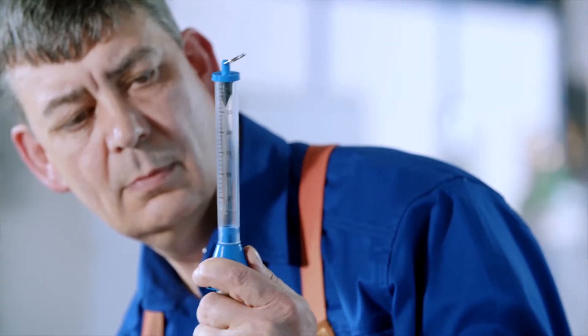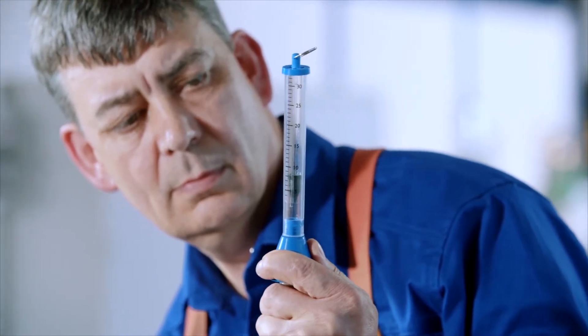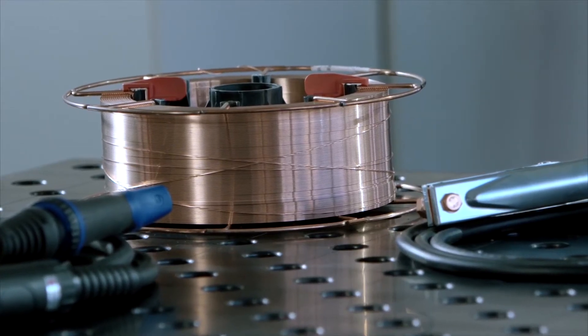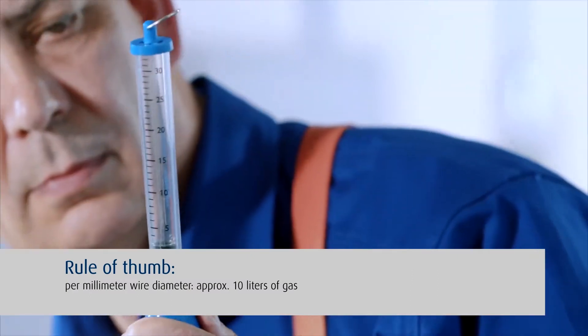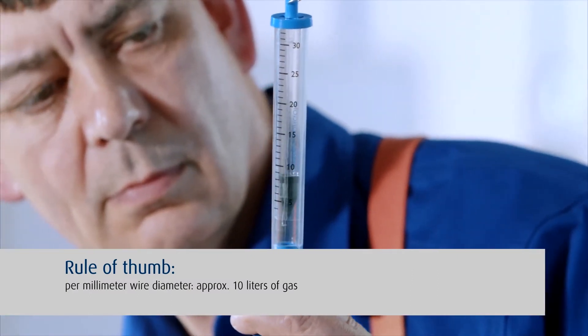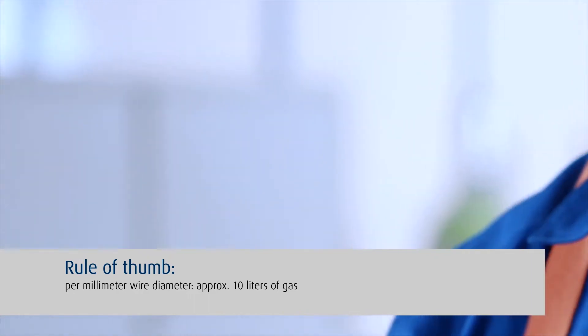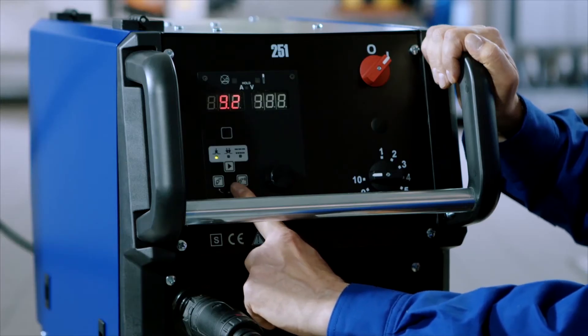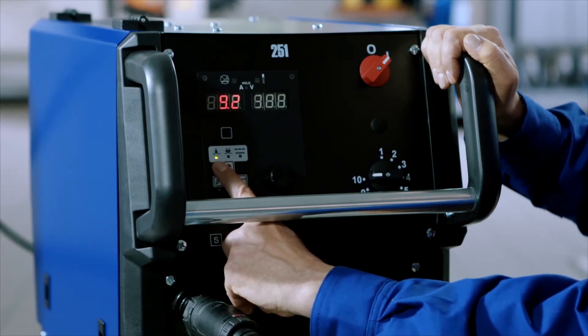Place the gas flow meter vertically onto the gas nozzle. The gas flow is based on the diameter of the wire. In the case of mild steel, you will require approximately 10 liters of gas for each millimeter of wire diameter or 1 cubic foot for 0.1 inches.